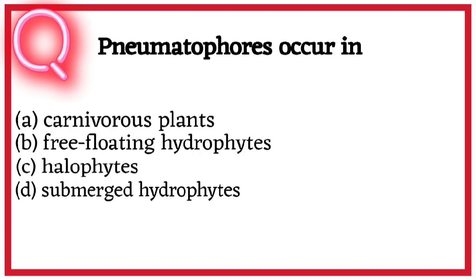Fifth question. Pneumatophores occur in A. Carnivorous plants, B. Free-floating hydrophytes, C. Halophytes, D. Submerged hydrophytes. So correct answer hai option C. Halophytes.